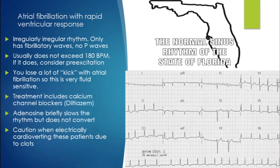AFib with RVR is basically the normal sinus rhythm of the state of Florida — everyone has it. This is an irregularly irregular rhythm with no discernible P waves. Early onset AFib has more of a coarse fibrillatory wave that you can actually see, and as time goes on they become more fine until you can't see them at all. One thing to keep in mind: AFib's rate never really gets over 170 to 180. If you see an irregular rhythm at a rate of 200 plus, start thinking about pre-excitation such as Wolff-Parkinson-White syndrome.